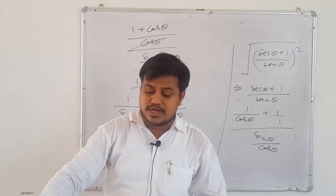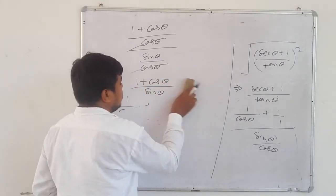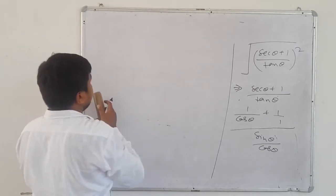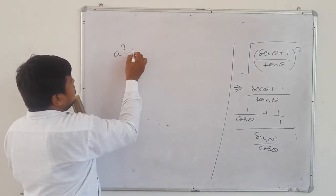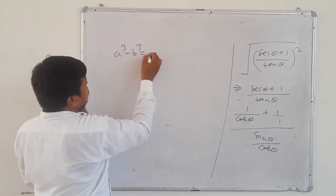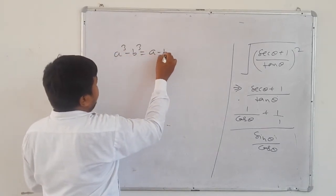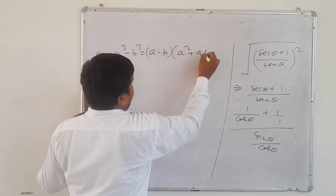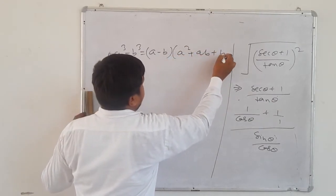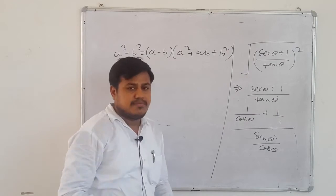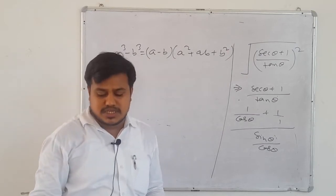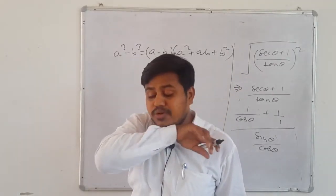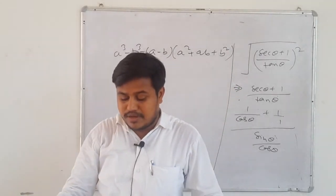Hint: a³ - b³ = (a - b)(a² + ab + b²). First change to sin/cos, and after that apply this identity.